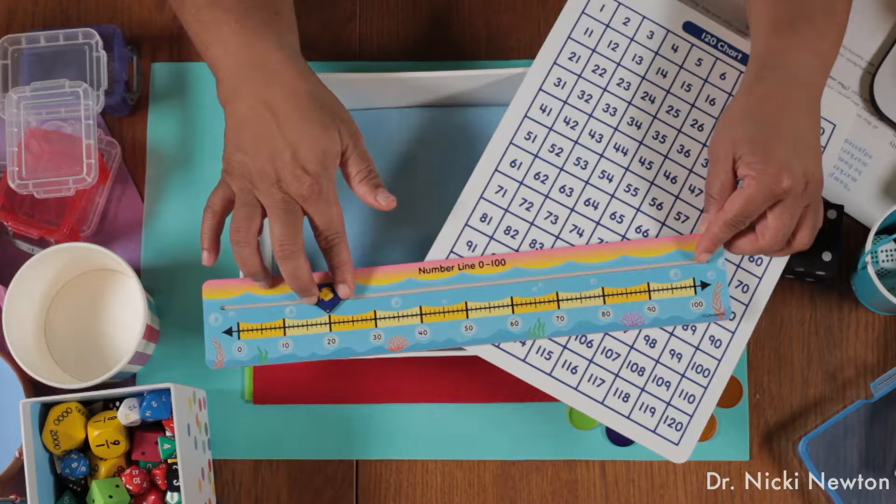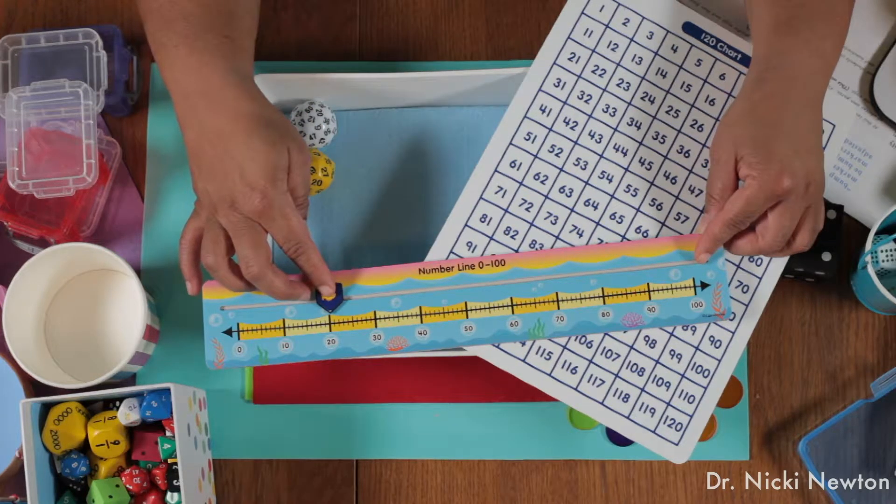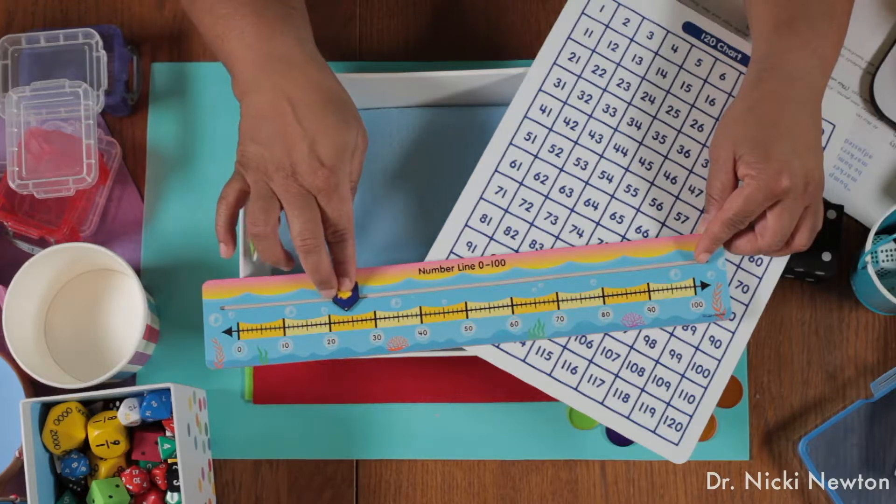So they can say, well, I'm at 19. They can see right here, oh, if I jumped one more, I'd be at 20, so now I'm just going to have to jump 11 more.